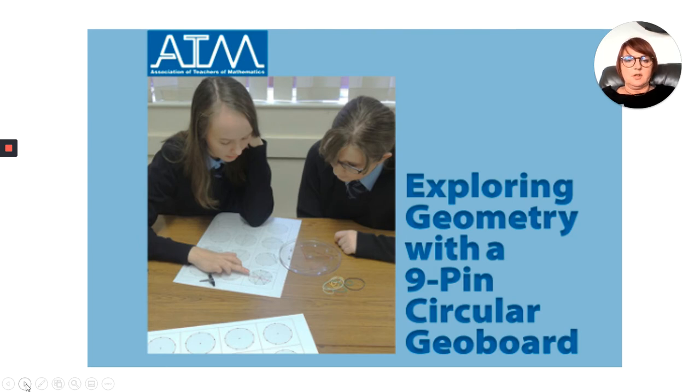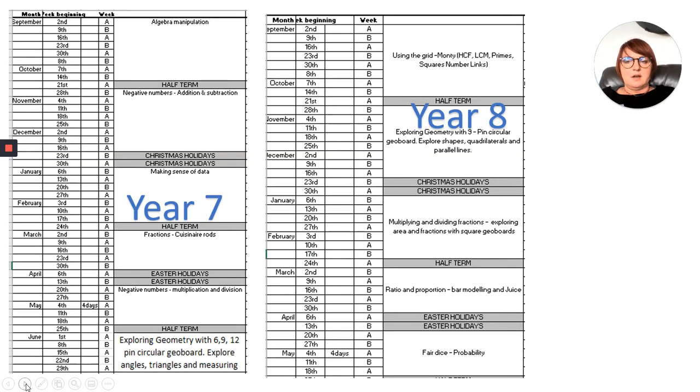I want to share with you how we use the book Exploring Geometry with a 9-pin circular geoboard in our scheme of learning. We start with Year 7 when in the last unit students explore angles, triangles, measuring angles, and the use of appropriate mathematical language.